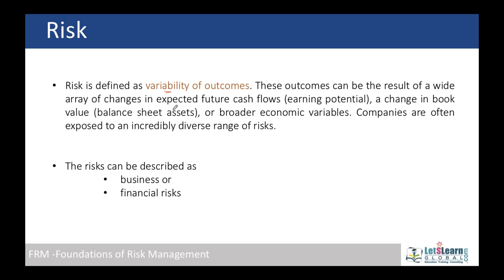When the outcome of an expectation is different from what was expected, we call it variability — the difference between our forecast and the actual outcome. So a risk is nothing but the variability of outcomes compared to expected items. It can be in earnings, it can be in assets.